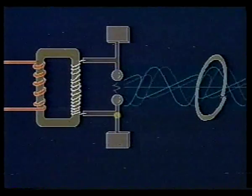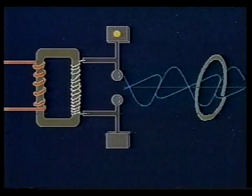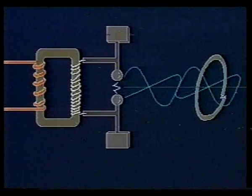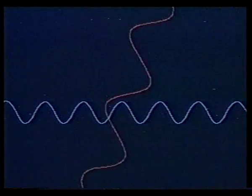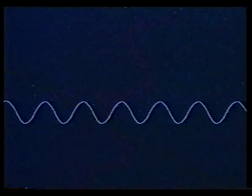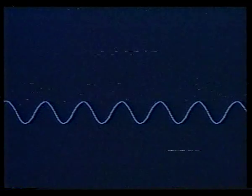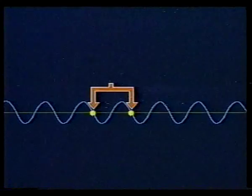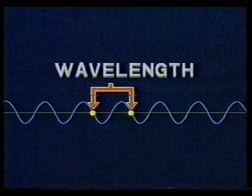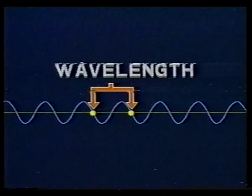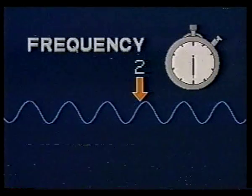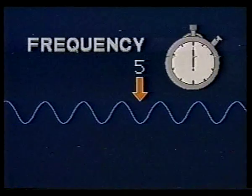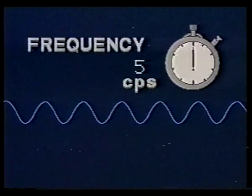This work confirmed Maxwell's prediction that electromagnetic waves result from accelerated charges. Scientists have since discovered an infinite range of different electromagnetic waves. Because they all travel at the constant speed of light, they can be identified either by the length of a single complete wave, or by the number of waves that pass a point in a second, expressed as cycles per second or Hertz.